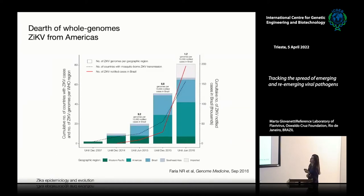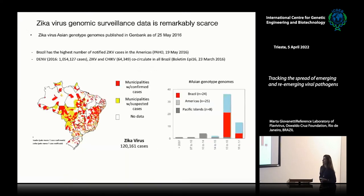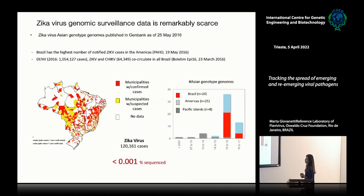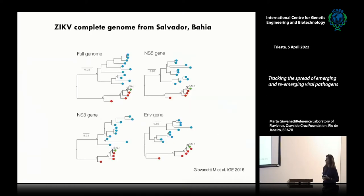We realized that for 10,000 notified cases in Brazil, there was just a really small number — like 1.2 genomes generated at the time. This was why we decided to try to improve and strengthen the genomic surveillance in the country by implementing, for the first time, the use of nanopore technology. And since then, our activity started.